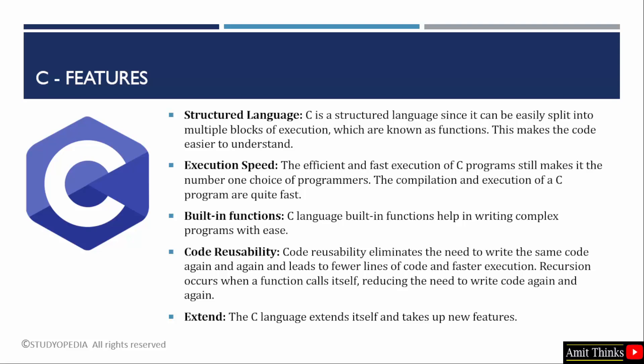C is a language that enables code reusability and better organization. It can run on different machines with minimal changes — that is, it is portable. It is considered a structured language, meaning you can easily split code into multiple blocks of execution called functions. Functions allow you to encapsulate code into reusable units, making your code more modular and easier to understand.